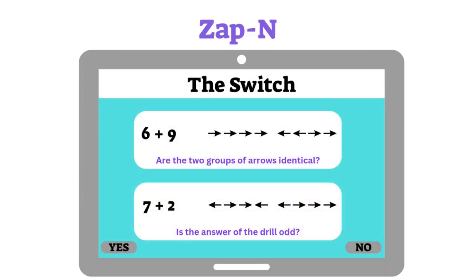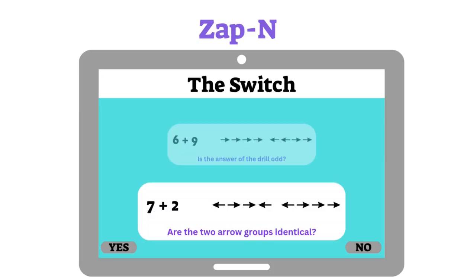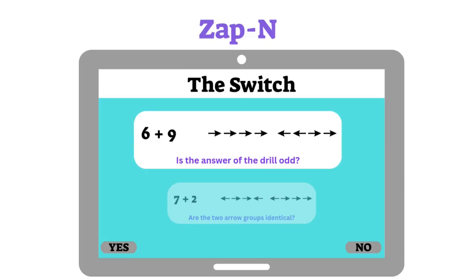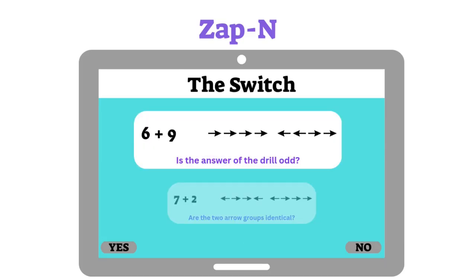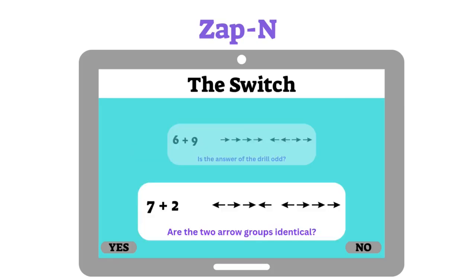The Switch is another simple game designed to measure attention. Throughout the game the blocks will constantly alternate. If the top block is highlighted, you need to indicate whether the result of the math drill is odd. If the bottom block is highlighted, you need to indicate whether the sets of arrows are identical.